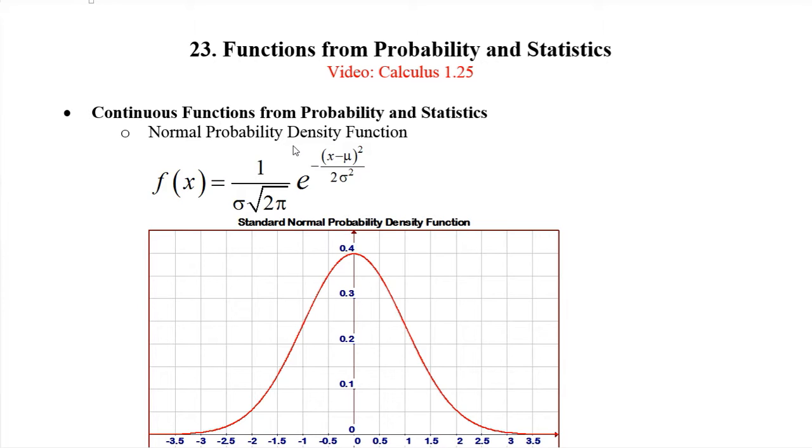In statistics we're interested in a PDF, a probability density function, and a CDF, a cumulative density function. The normal probability density function is the PDF. Here is the formula for it. Most of these things are constants, and this is actually a remarkable formula because it puts together a lot of the most basic and interesting constants in mathematics.